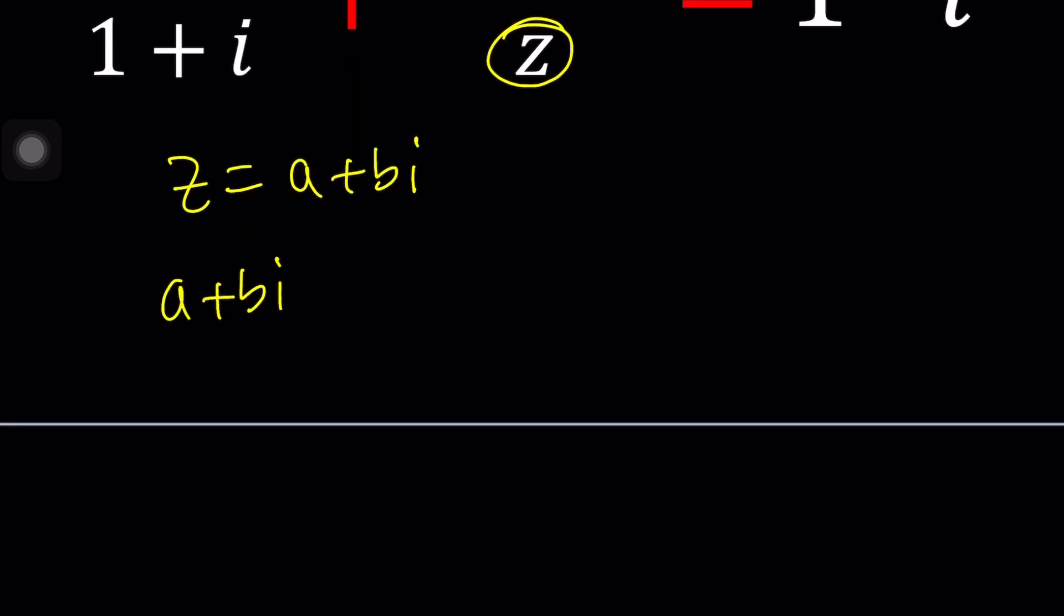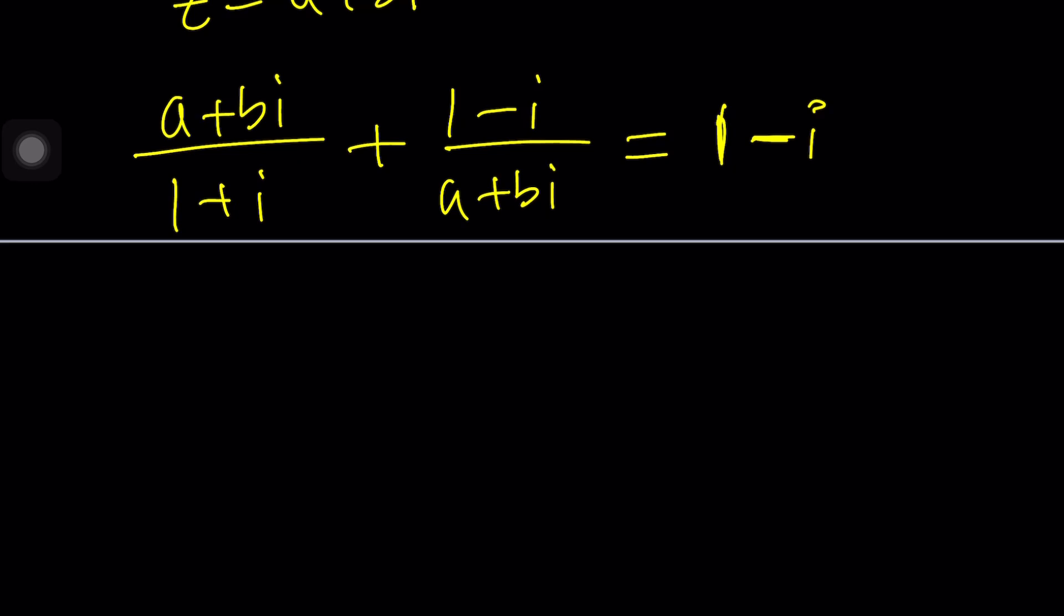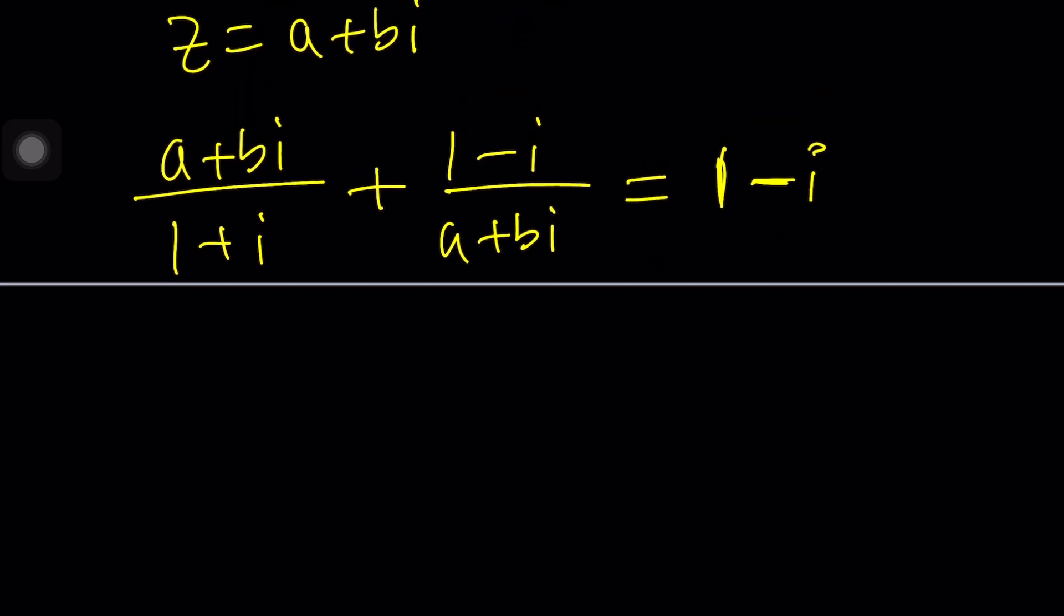A plus bi divided by one plus i, plus one minus i divided by a plus bi. Notice that these two expressions are not reciprocals. They're different. I did that on purpose so that would be more interesting. But the result was interesting. I was kind of surprised at the results. I wasn't expecting these results. Anyways, you'll see in a little bit.